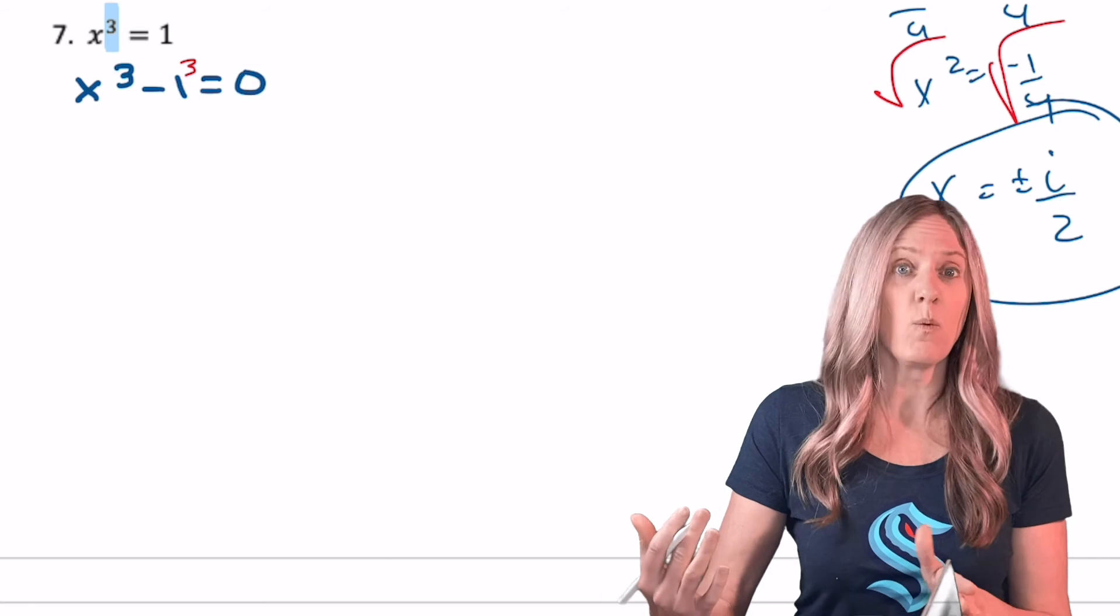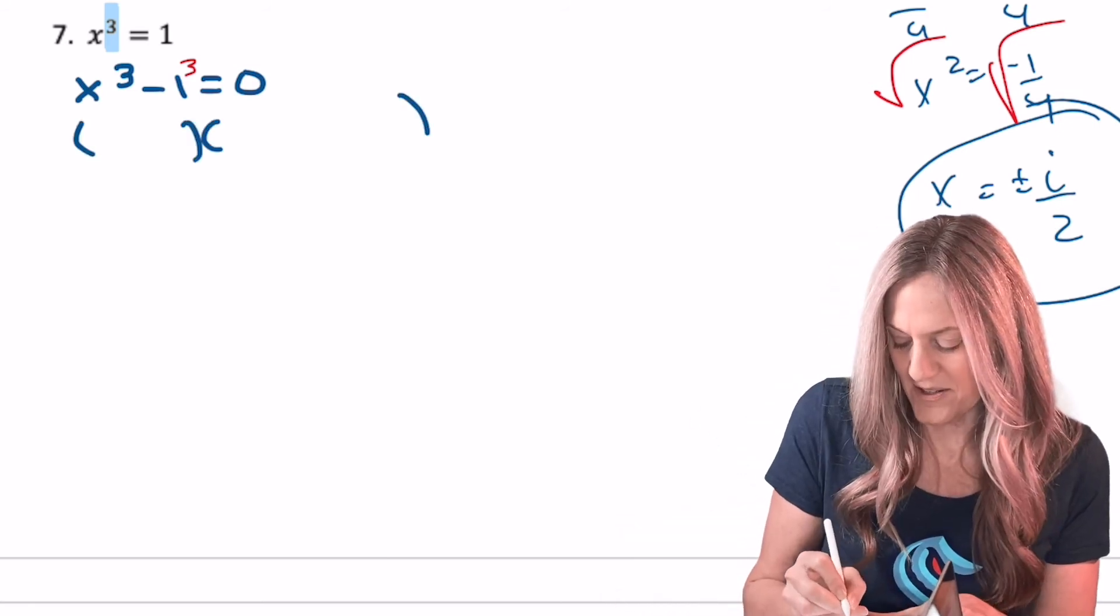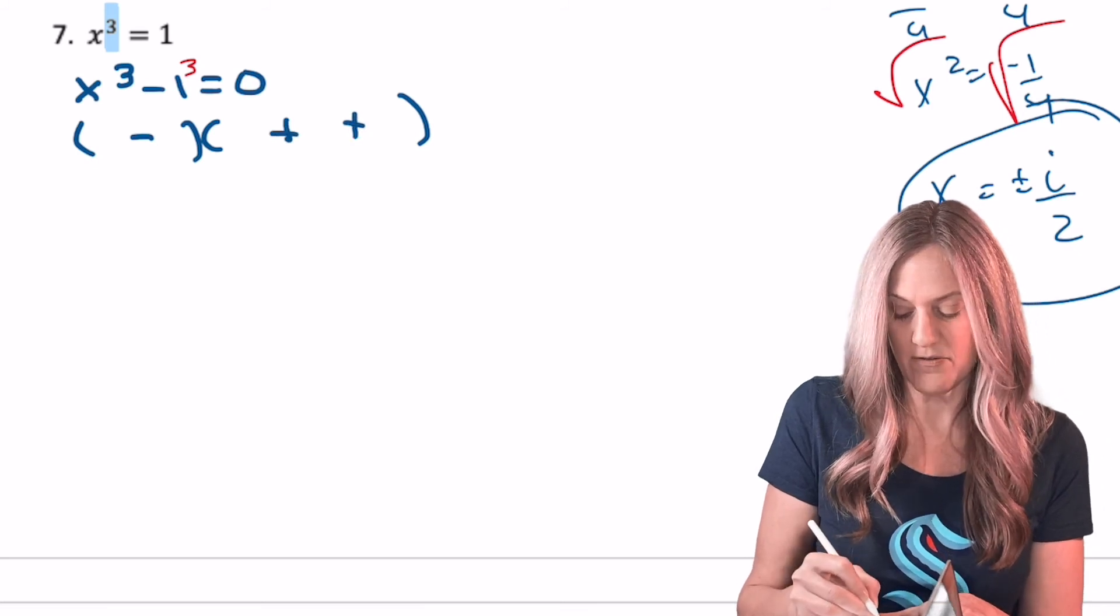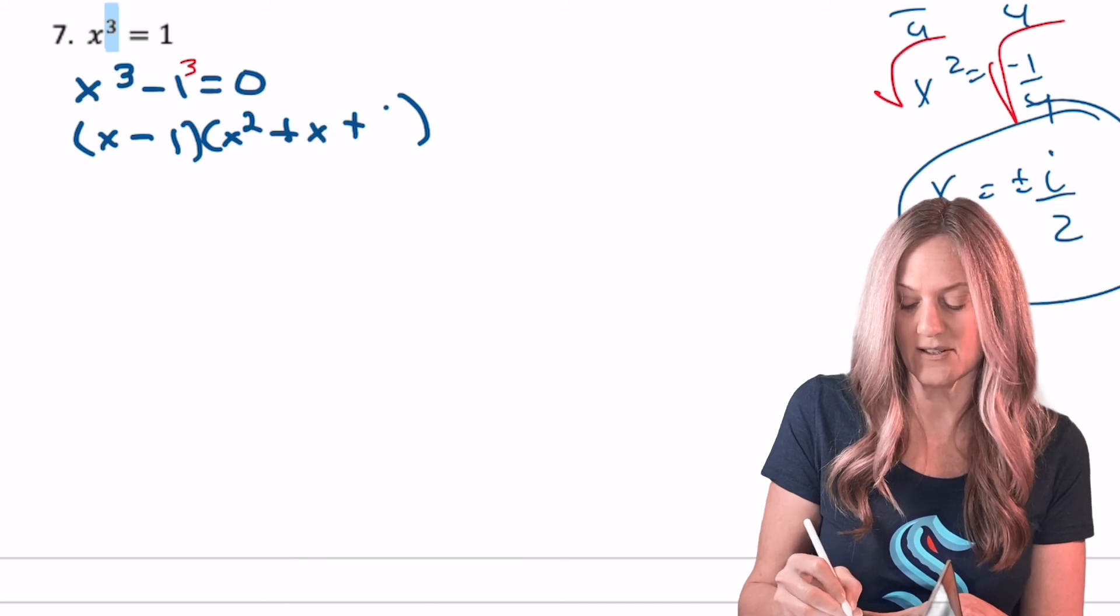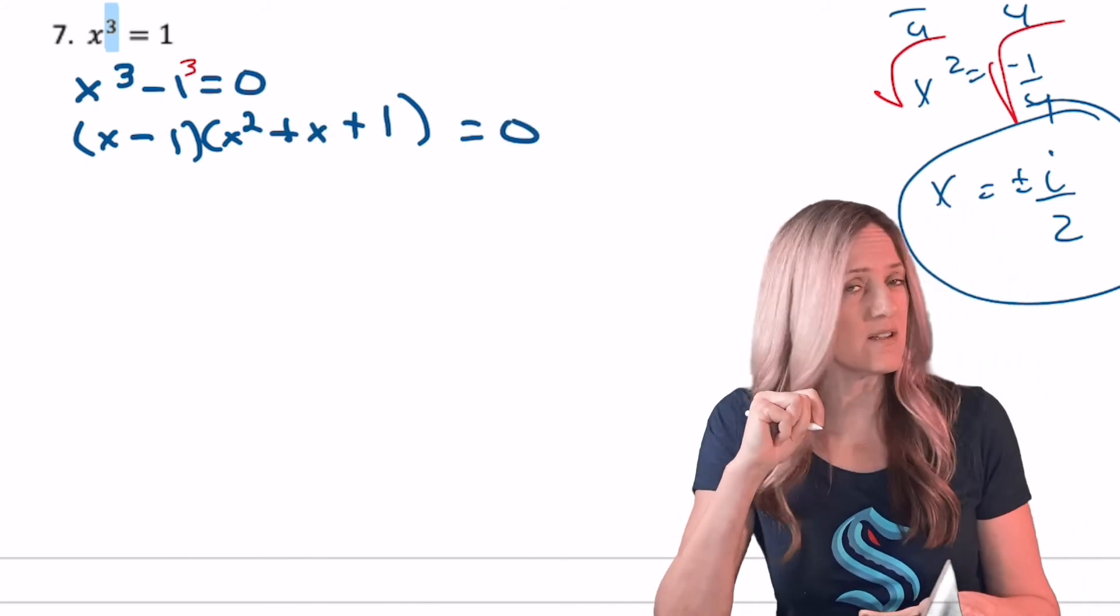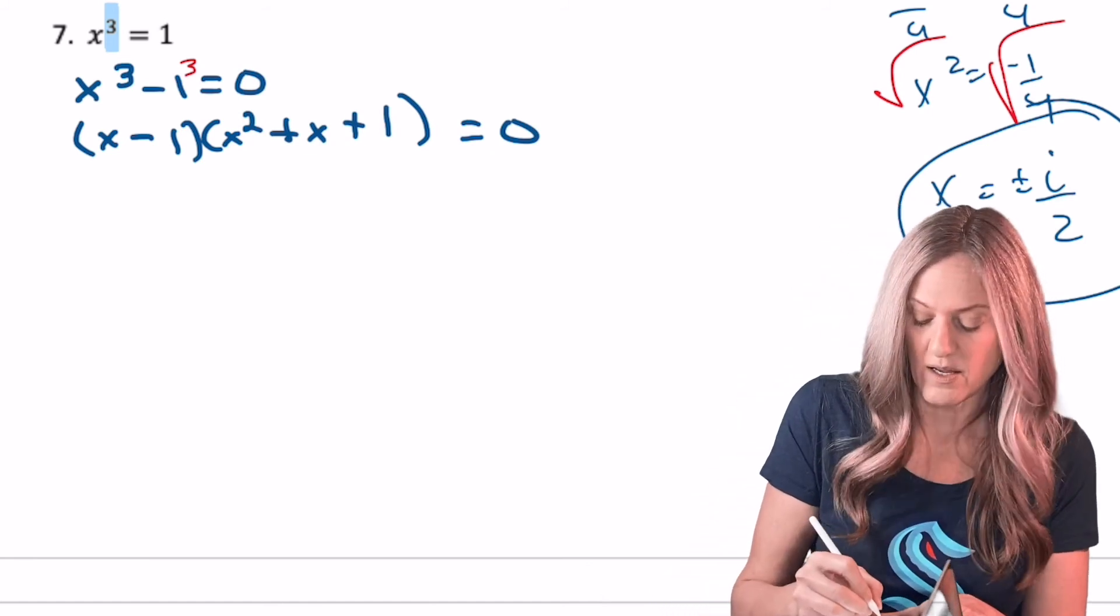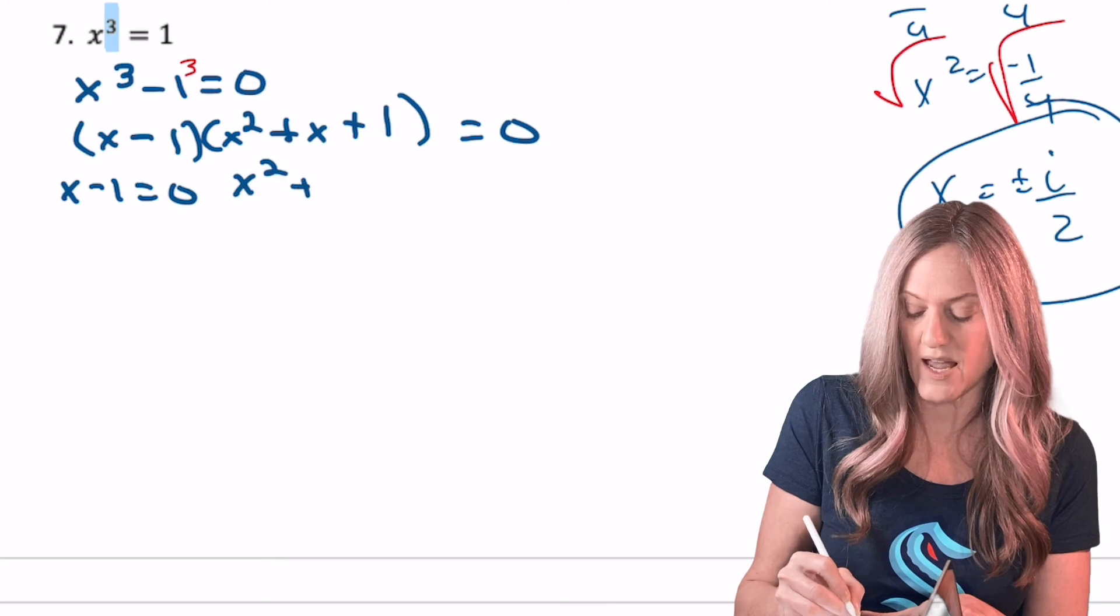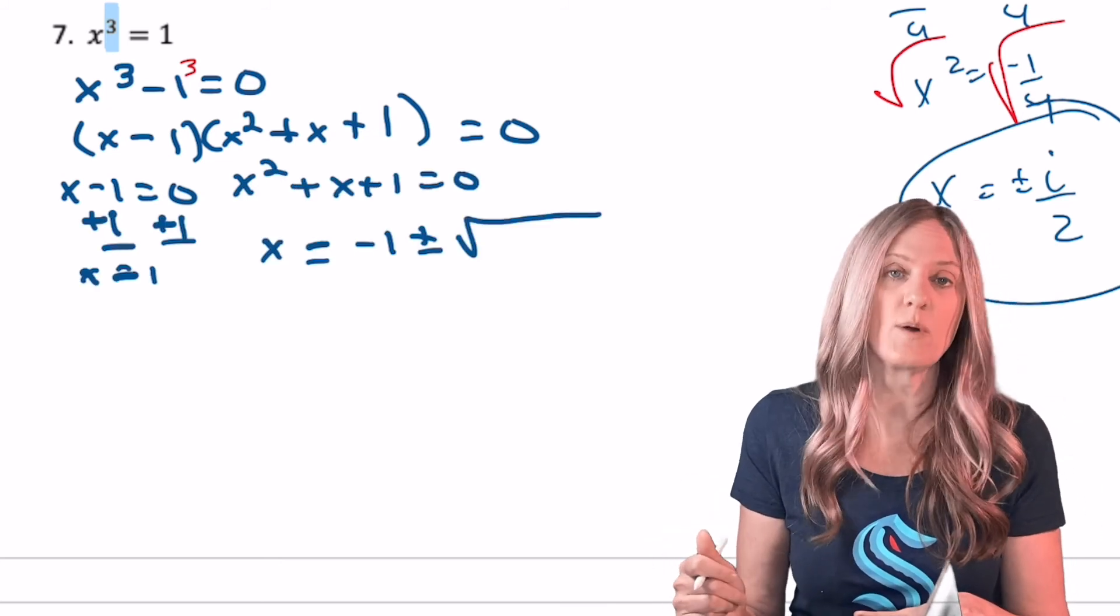X cubed minus one equals zero. What should I do? Oh yeah, so binomial, trinomial, same sign, opposite sign, always positive. First, last, first term squared, multiply together, last term squared. Remember, it's an equation, so equals zero. Now I'll do zero product property. X minus one equals zero and X squared plus X plus one. The trinomial isn't factorable, so I'm going to use the quadratic formula.